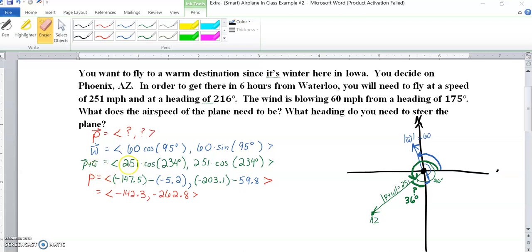But what I did was, and I even tried to color code it here. I took the P plus W vector minus the W vector to get my red P vector. So our resulting vector, cosine 234 times 251, that's in green here. And then I took that minus the 60 cosine 95, which is in blue. That resulted in negative 142.3. Then in our Y component, we took our green, 251 sine 234, which is this number, minus the sine 95, which is this number.